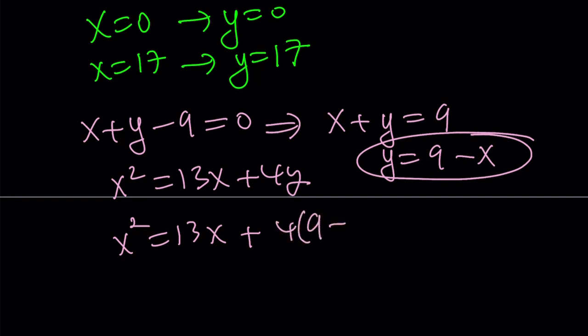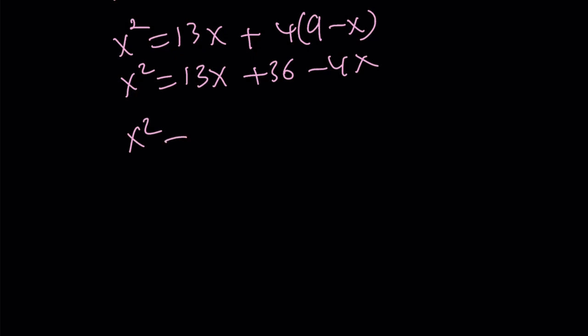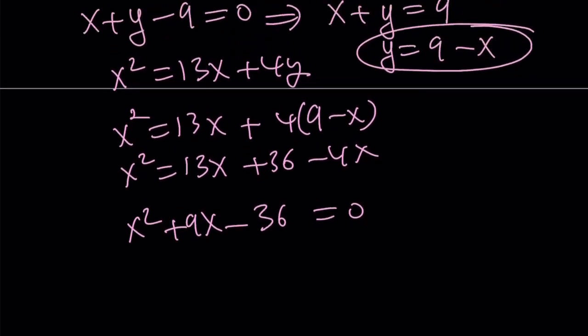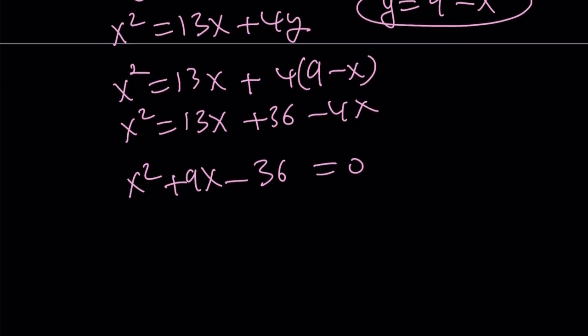You're going to get 4 times 9 minus x. And this is going to give you x squared equals 13x plus 36 minus 4x. And this is going to give you a negative 9x. But it's going to be positive 9x on the left-hand side and negative 36 on the left-hand side. And now you're looking for two numbers whose product is negative 36 and whose sum is 9. And those numbers are... from here you're going to get the following. x minus, let's see, x equals 13x. I hope I didn't make a mistake because something doesn't look right to me. Let me go ahead and double check real quick. So we get x plus y equals 9, y equals 9 minus x. And 36 minus 4x. And we replace y with that. And now we get x squared equals 9x plus 36.